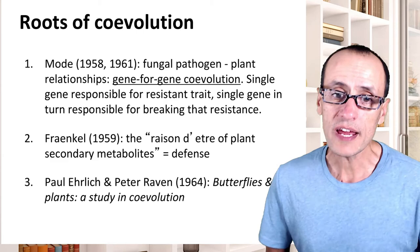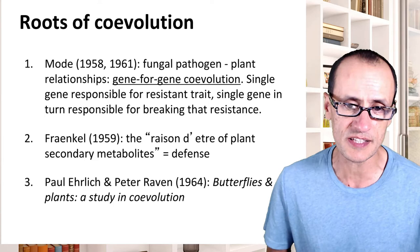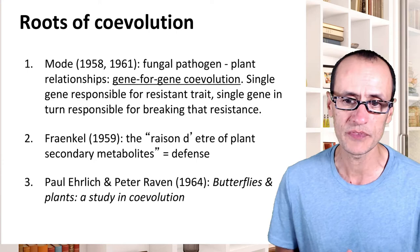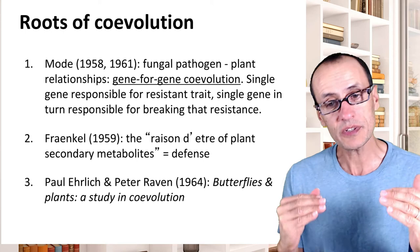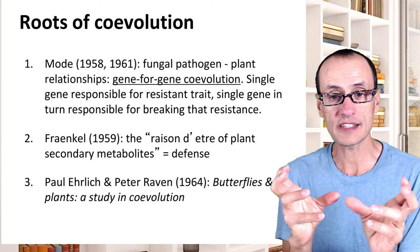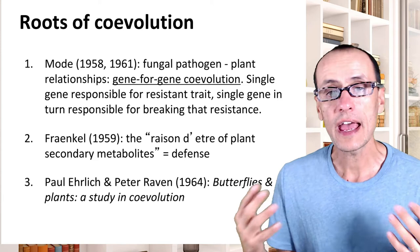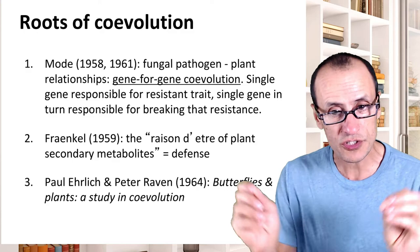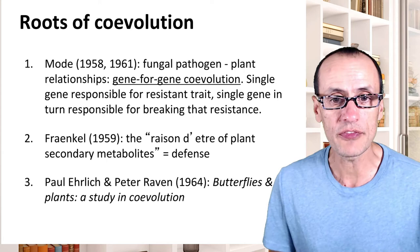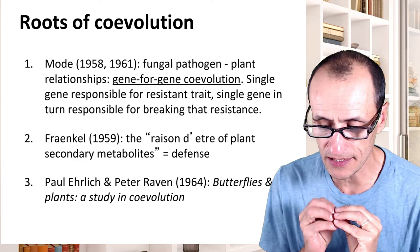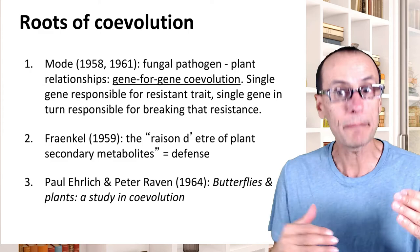Ehrlich and Raven proposed a next step from this in a classic study entitled 'Butterflies and Plants: A Study in Co-Evolution.' In this paper, they proposed a series of potential steps through which the interaction between plants and insects could drive the evolution of different defensive chemistries and also the speciation of lineages — the diversification of lineages to the point where they could no longer interbreed.